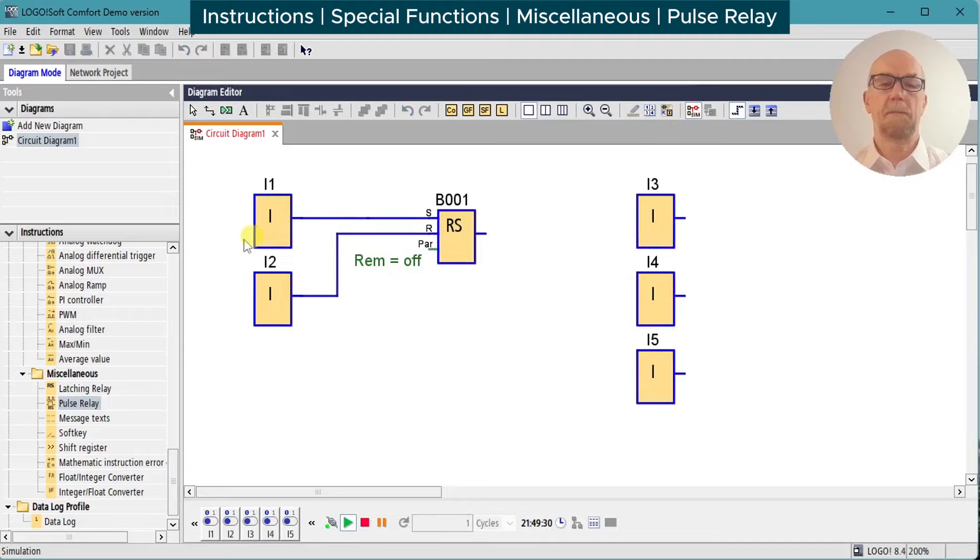Run the simulation. If we toggle the set input, the output turns on. If we toggle the set input off, the output remains on. Press the reset input. The output turns off. Release the reset input. The output remains off.